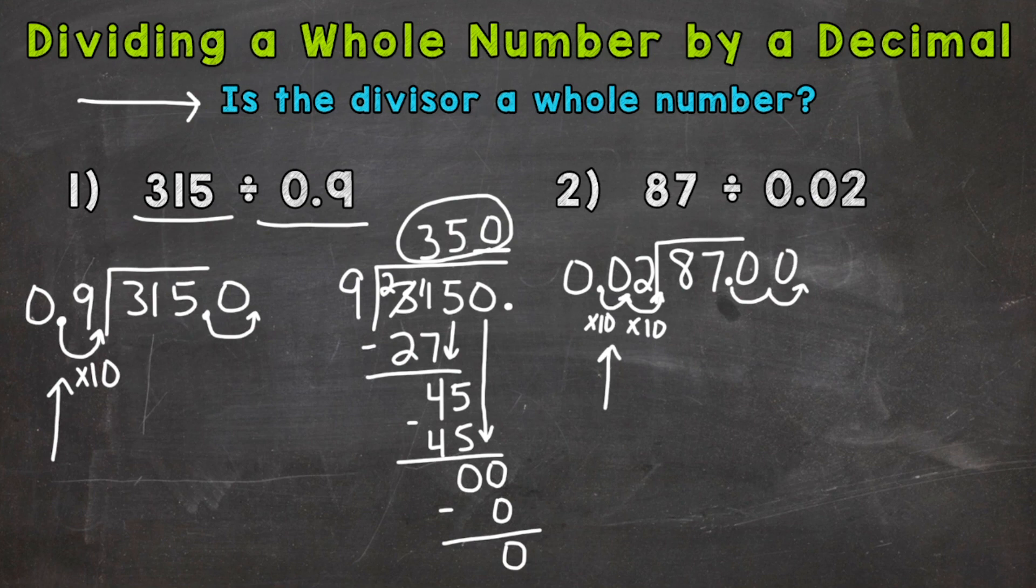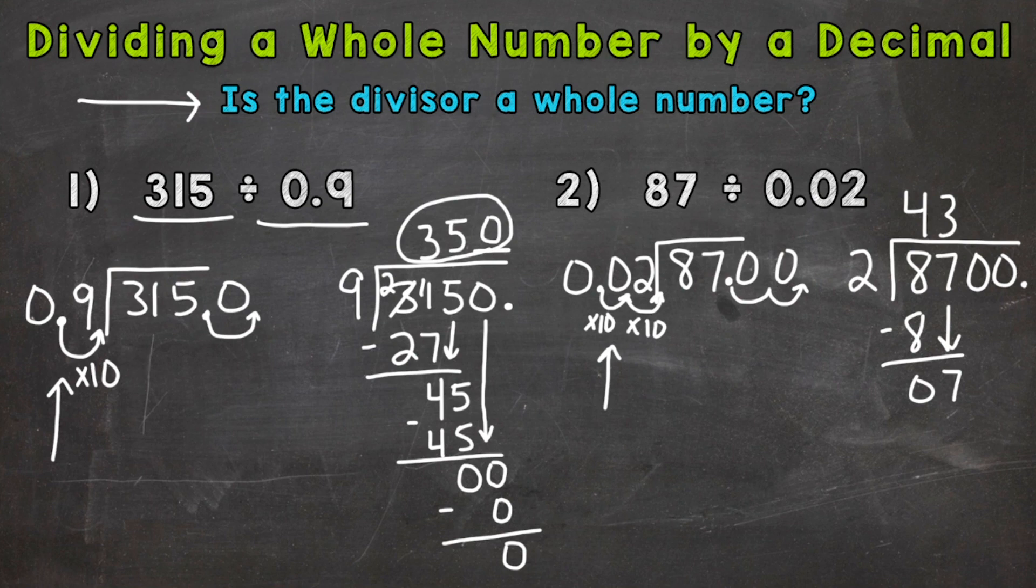So let's rewrite our problem with our whole divisor of 2. And we have 8,700 here, decimals at the end of a whole number. And now that we have a whole divisor, we are ready to go through our process. So 8 divided by 2 is 4. 4 times 2 is 8. Subtract, we get 0. Bring down this 7. 7 divided by 2. So how many whole groups of 2 out of 7? Well, 3. That gets us to 6. 3 times 2 is 6. Subtract, we get 1.